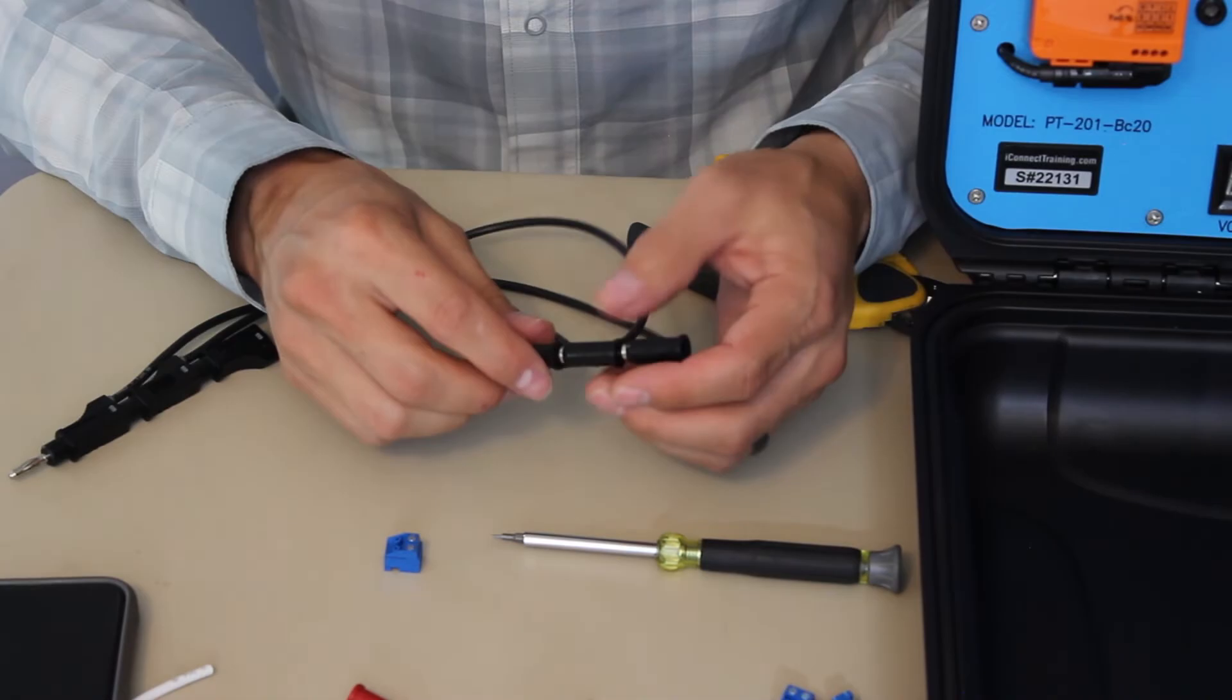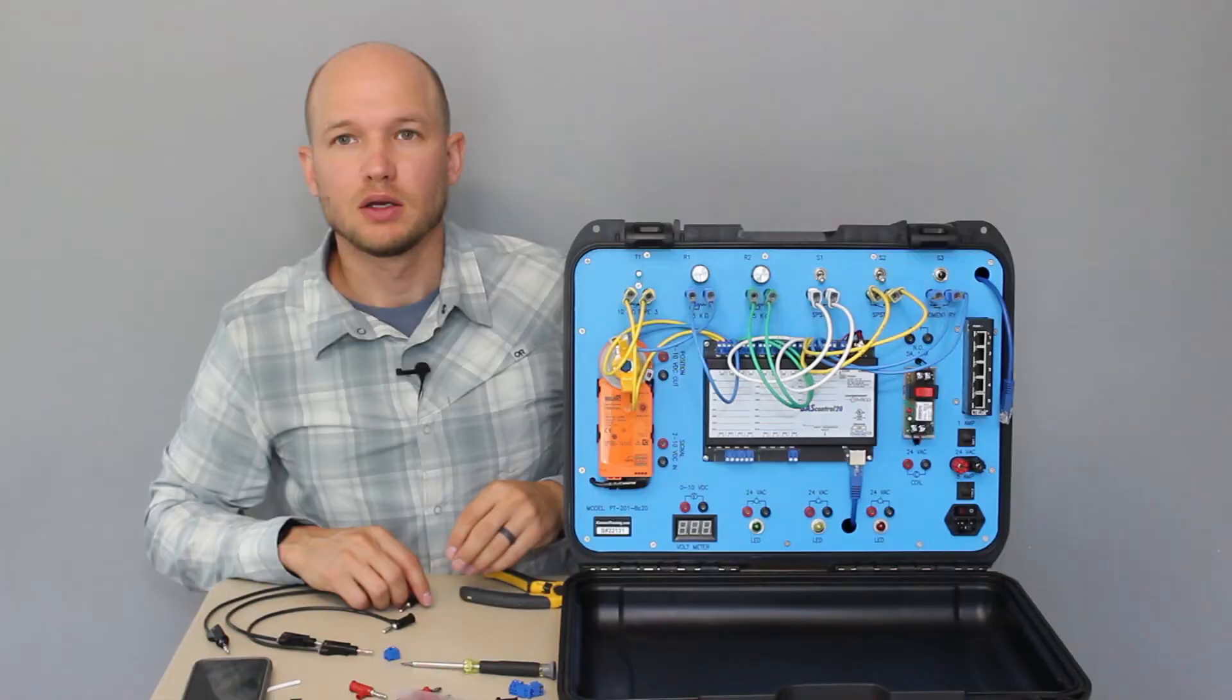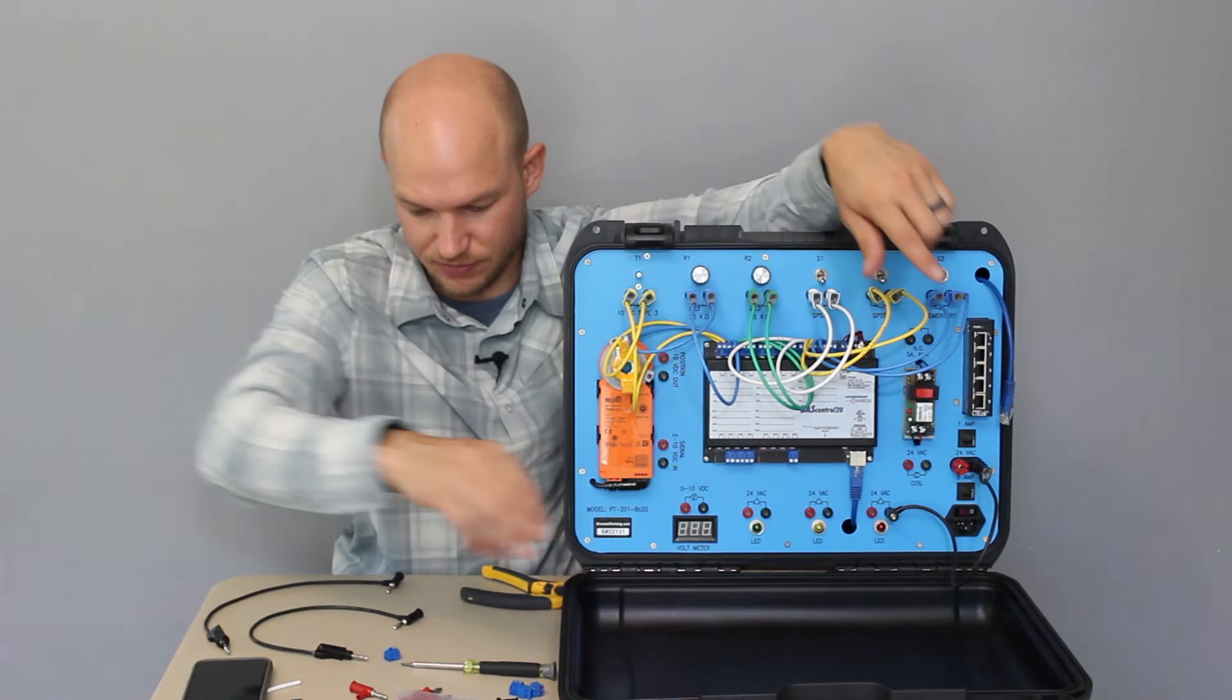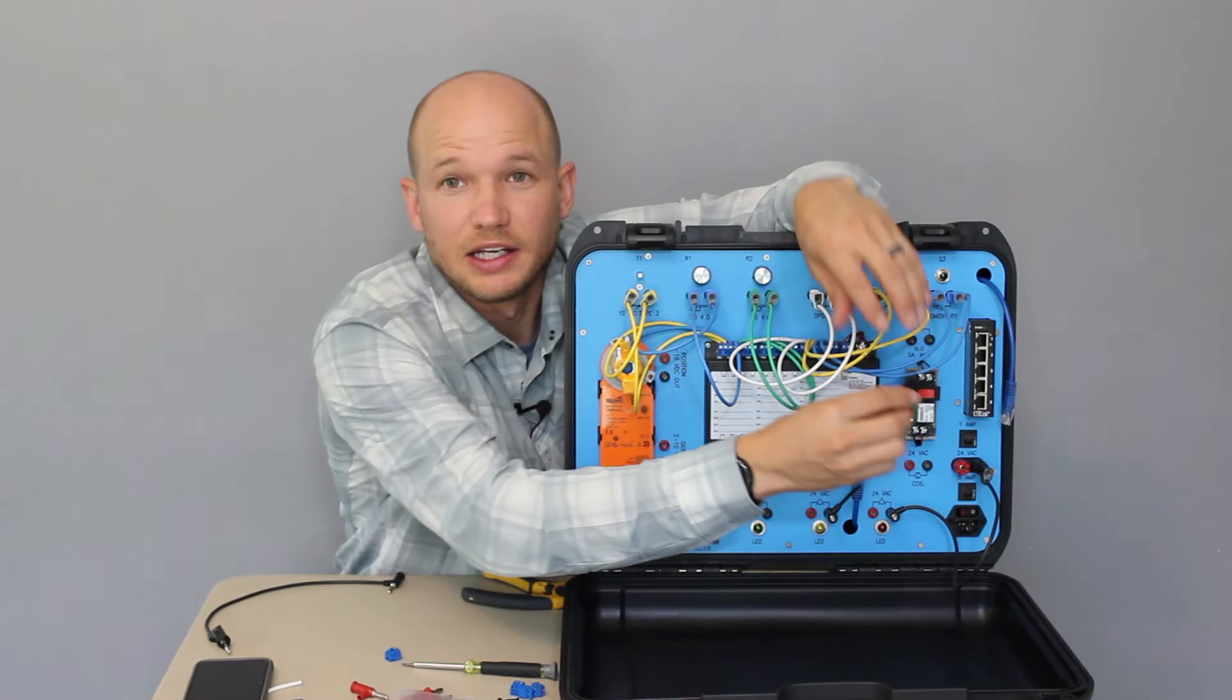So we have our black leads made up for these lights. We're going to connect the black to the 24 volt AC black or common. We're going to do that for all the lights. And again, since they're stackable, just plug it in like that.